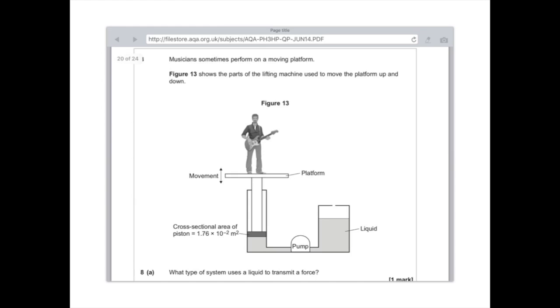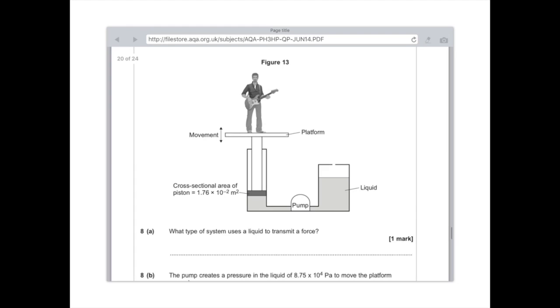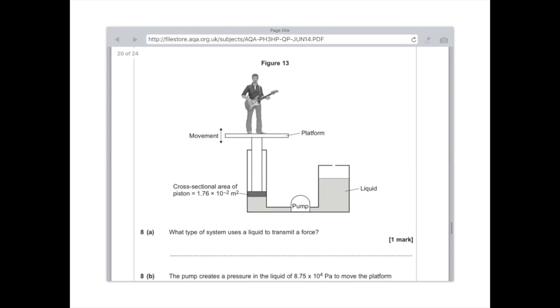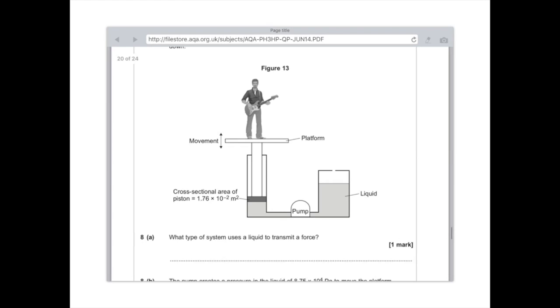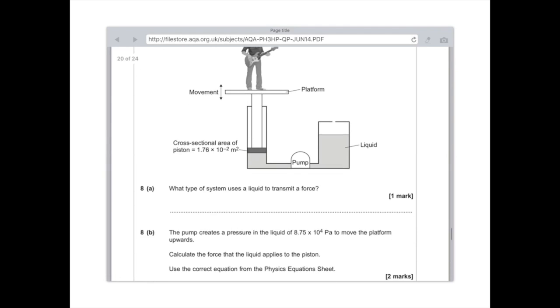So, the next question I found, question 8. Musicians sometimes perform on a moving platform. Figure 13 shows the parts of the lifting machine used to move the platform up and down. So, similar layout to the previous question I just showed you. They've given us a cross-sectional area of the piston down at the bottom left-hand corner. And we know that it's full of liquid. So, what type of system uses a liquid to transmit a force? And the answer here is a hydraulic system.